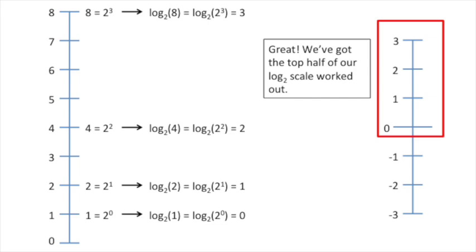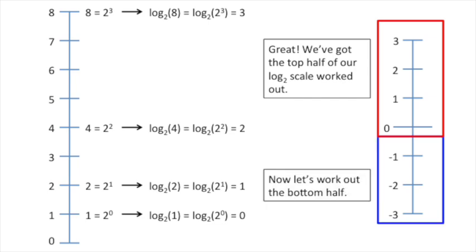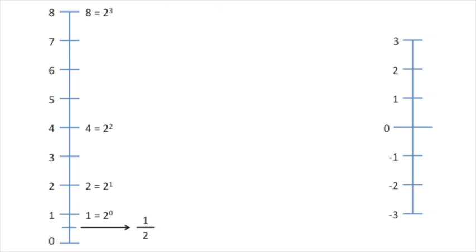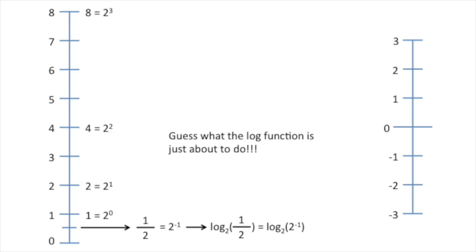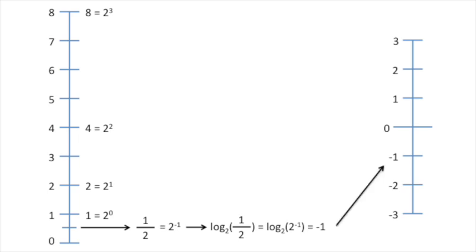We've got the top half of our log base 2 scale worked out. Now let's work out the bottom half. On our normal number line, we have 1/2. 1/2 can be rewritten as a power of 2, which means that the log base 2 of 1/2 is the same as taking the log base 2 of 2 to the negative 1. The log function isolates the exponent — negative 1 is the log base 2 of 1/2.